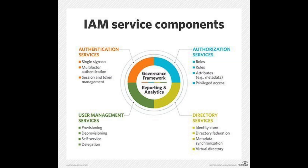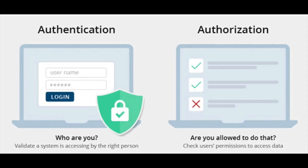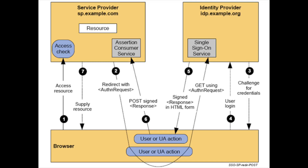Next is Identity and Access Management, or IAM. It is exactly what it sounds like — identity management, which is authentication, and access management, which is authorization. The first part is proving you are who you say you are; the second is whether you actually have access to the resource or application. Understanding the difference between authentication and authorization is important. Most companies have some kind of IAM system that can combine SSO, federation, identity providers, access tokens, and multi-factor authentication.